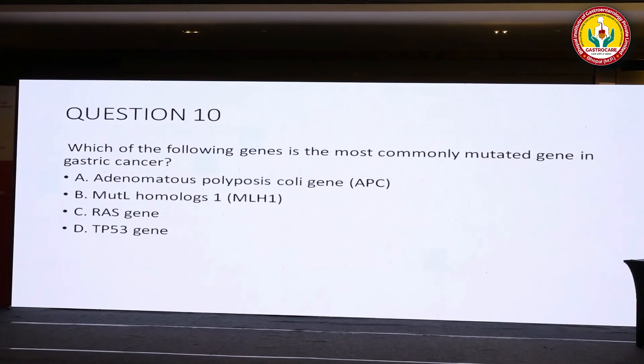Question number 10: which of the following is the most commonly mutated gene in gastric cancer? Option A: APC. Option B: MLH1. Option C: RAS. Option D: TP53.